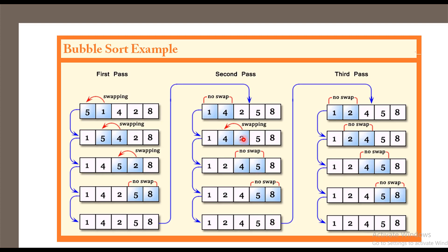After the second pass, the second maximum value, 5, has come into the second-to-last position. So in bubble sort, after the first pass the maximum number is at the last position, after the second pass the second maximum is at the second-to-last position, and so on. We can see this array is sorted, but the program does not know this unless it iterates through all the elements. Hence we go for a third pass.